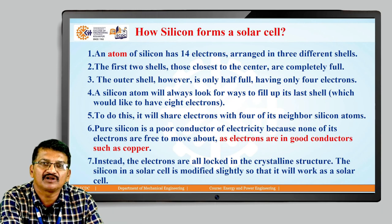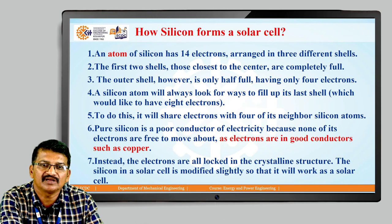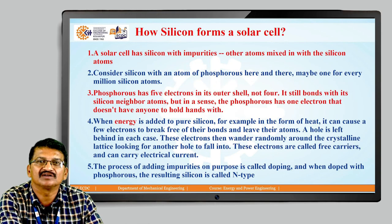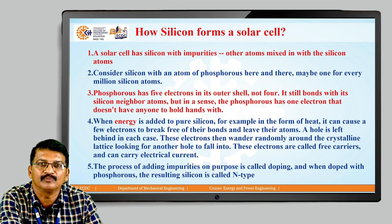Pure silicon is a poor conductor of electricity because none of its electrons are free to move about, as electrons are in a good conductor such as copper. Instead, the electrons are all locked in the crystalline structure. The silicon in a solar cell is modified slightly so that it will work as a solar cell — this is done by adding impurities.